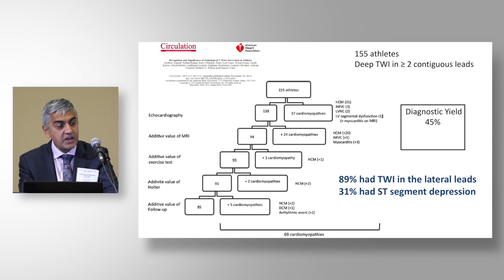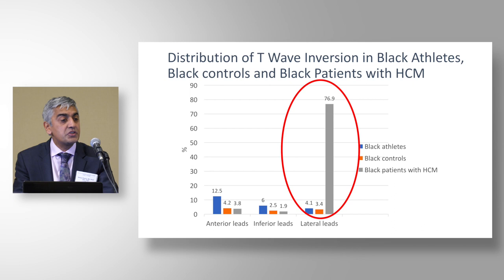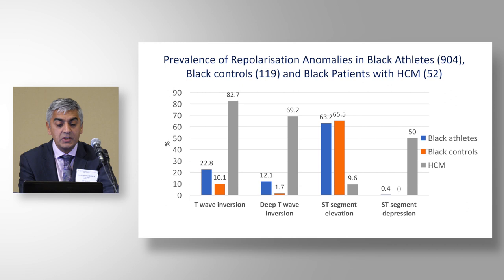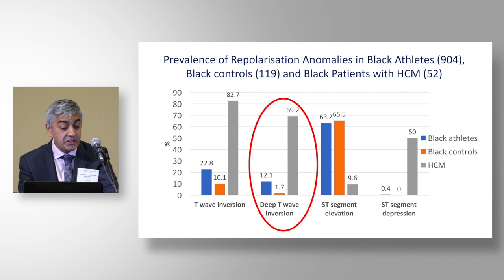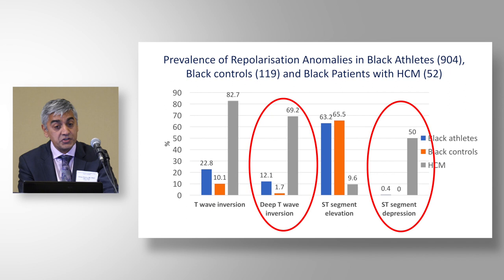89% of these individuals had deep T-wave inversion in the lateral leads, and one-third had ST-segment depression. In black patients with hypertrophic cardiomyopathy, lateral T-wave inversion is highly prevalent, the T-wave inversion is deep, and there is often accompanying ST-segment depression. That is why the Schnell study had a very high prevalence of HCM — it already included athletes with very abnormal ECGs showing deep lateral T-wave inversion and ST-segment depression, which are always suggestive of cardiac pathology. Lateral T-wave inversion should always cause concern.